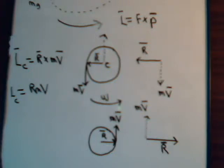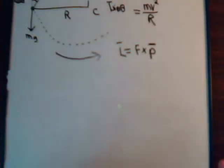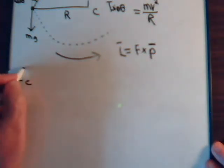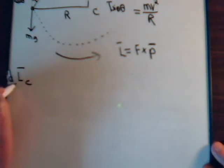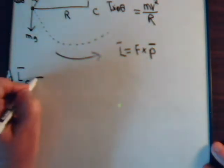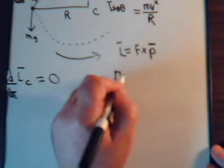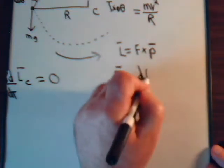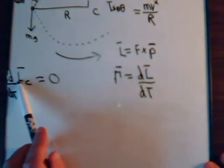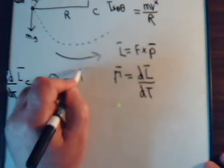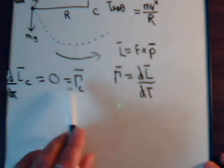Now let's talk about the torque about point C. We've just shown that the angular momentum about point C is conserved, so its time derivative is zero. But we also know that the torque equals the time derivative of the angular momentum. So if the time derivative of L_C is zero, then the torque about C must also be zero.